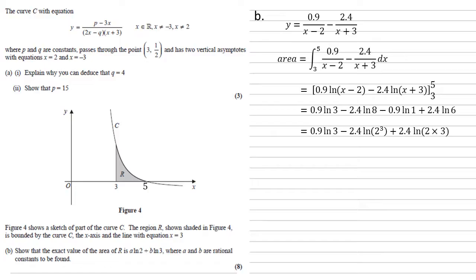Now if we've got ln of a number to a power, we can bring that power out as a multiple. So 2.4 ln 2 cubed becomes 3 lots of 2.4 or 7.2 ln 2. ln of two things multiplied together becomes ln of one of them add ln of the other. So we end up with 2.4 ln 2 add 2.4 ln 3 at the end.